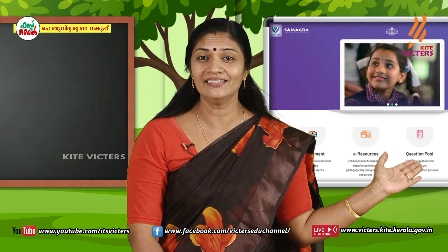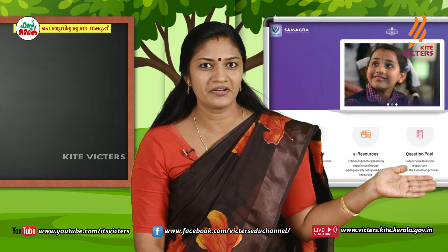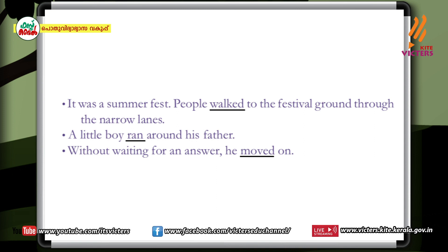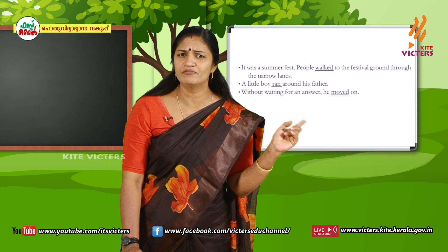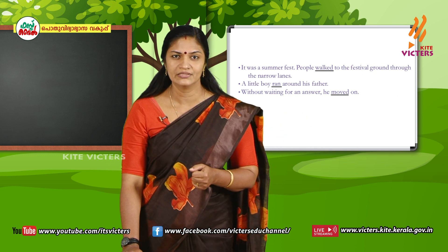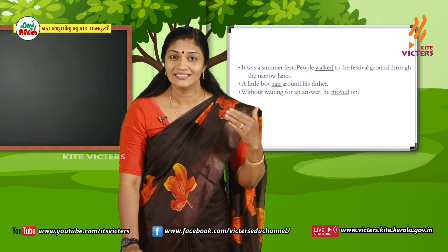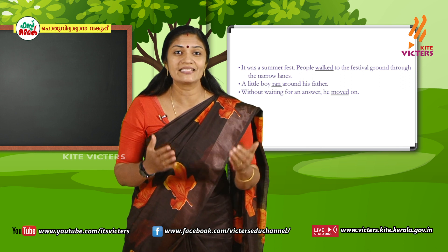Friends, now look here. These are some sentences from our story. Read it. It was a summer fest. People walked to the festival ground through the narrow lines. A little boy ran around his father. Without waiting for an answer, he moved on. Friends, see — some words are underlined. What is the speciality of those words? Yeah, those words denote past actions.